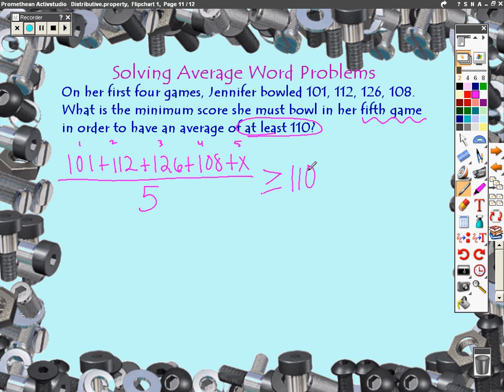Alright, so how do we go about solving this? We can go a couple of ways. I'm going to go with what I would call the short and easy way and I'm going to add up the numbers on the top to give me 447 plus x divided by 5 is greater than or equal to 110.